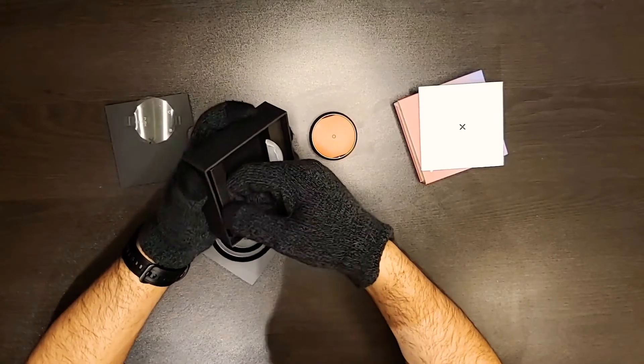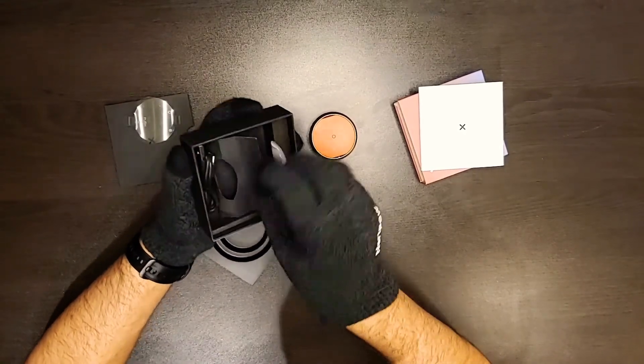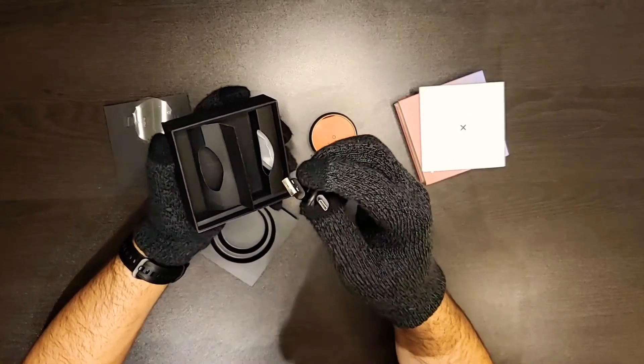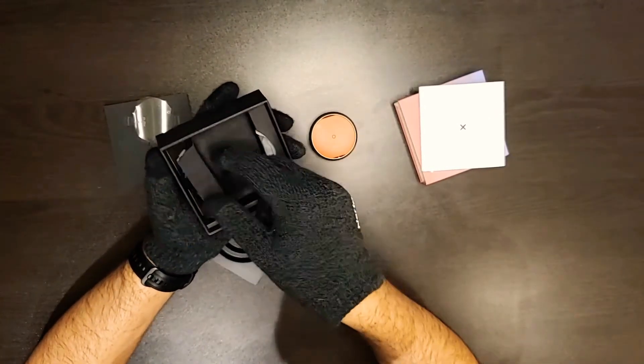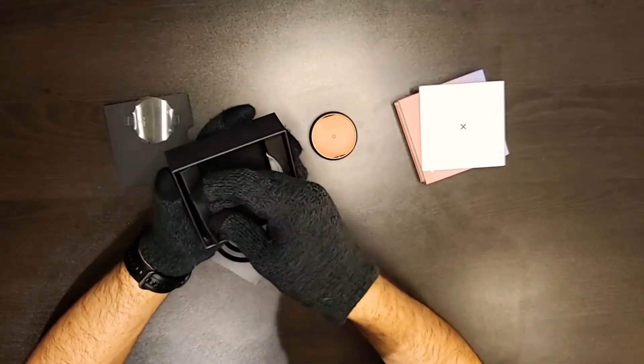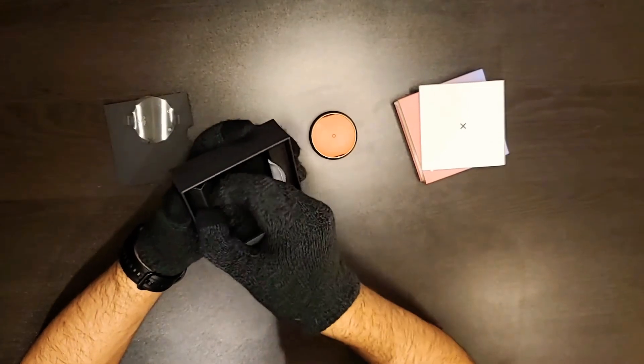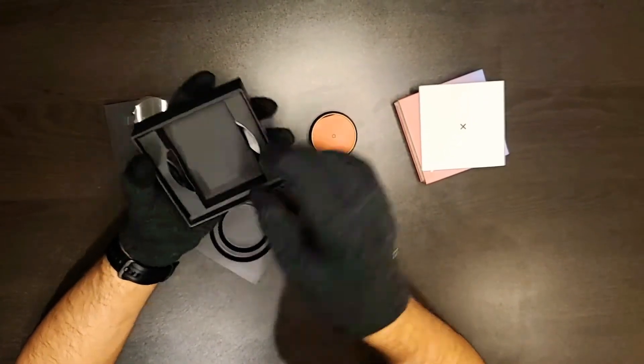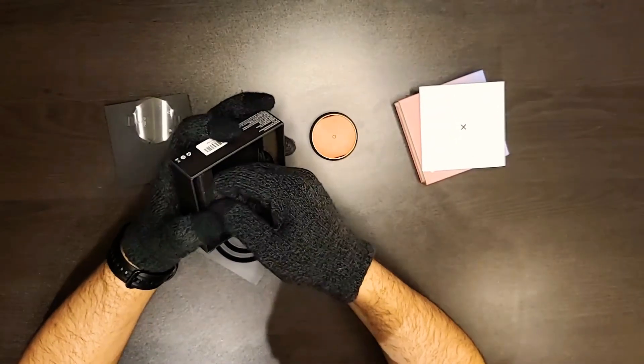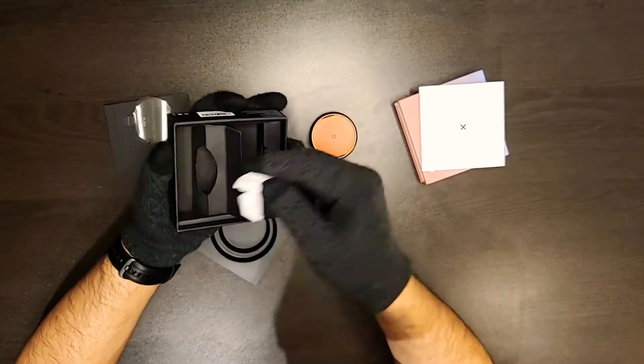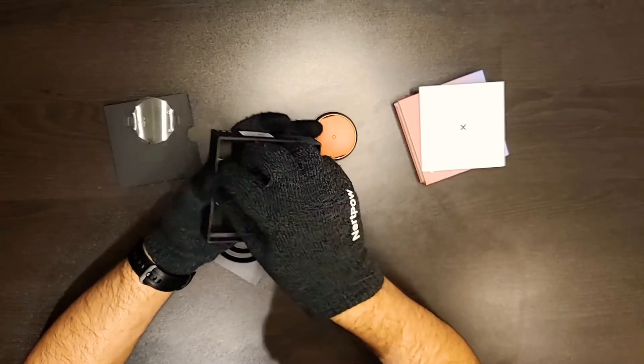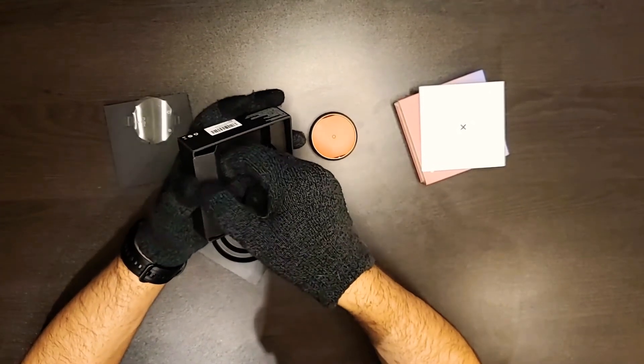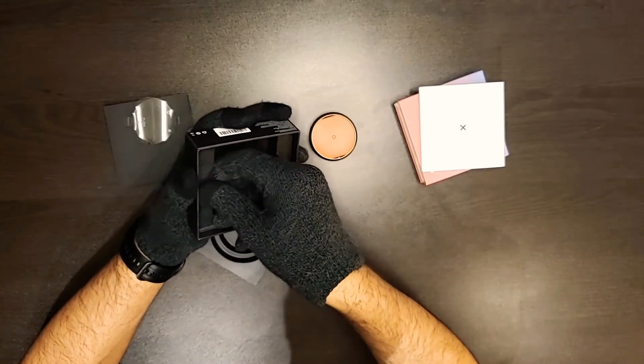So here we have the USB-C to USB-A charging cable. It doesn't have an adapter, it's just a cable. And on the other side we have basically the different sizes here for the earpieces. And that's basically everything we get in the box.